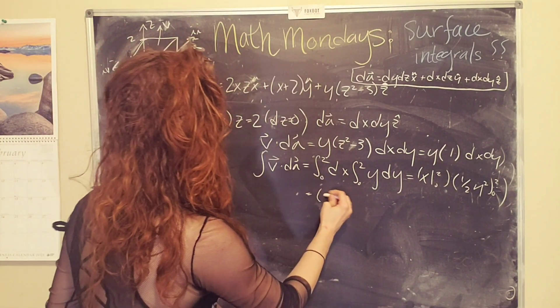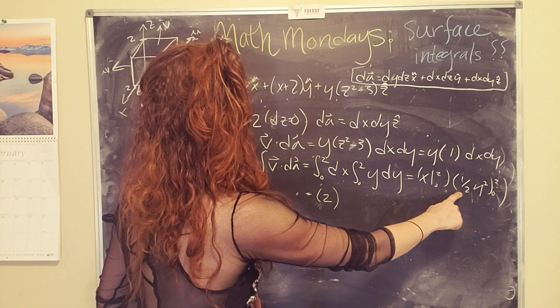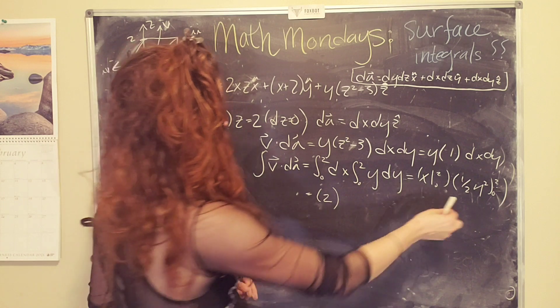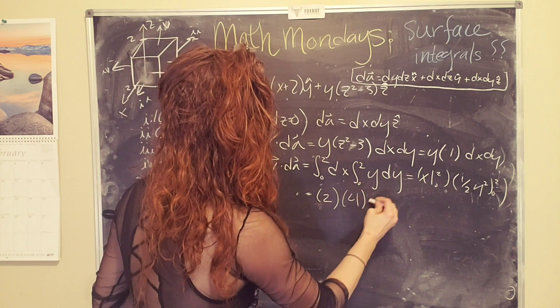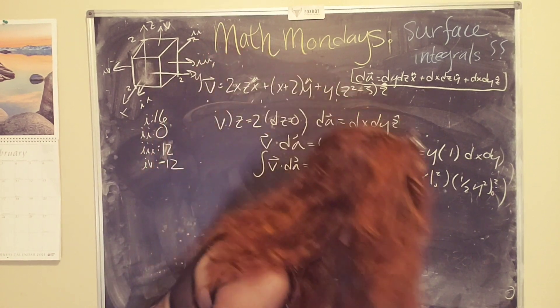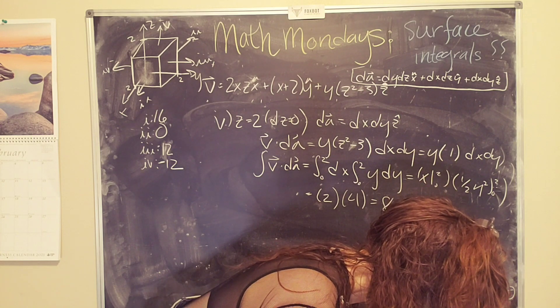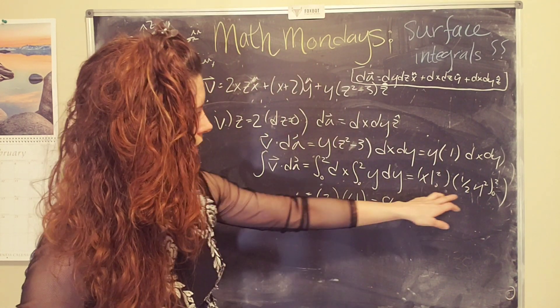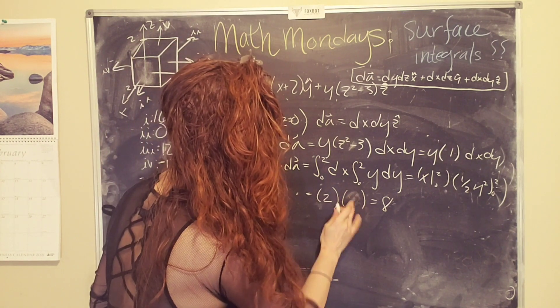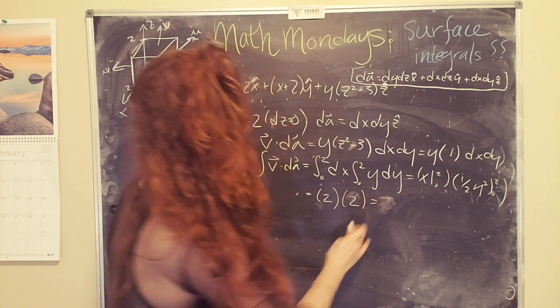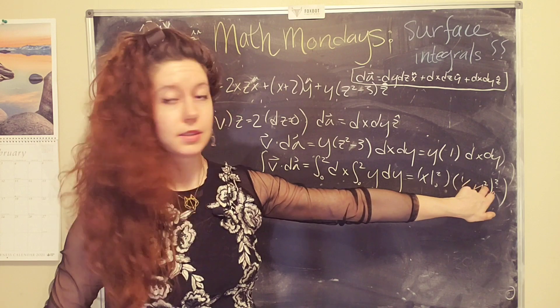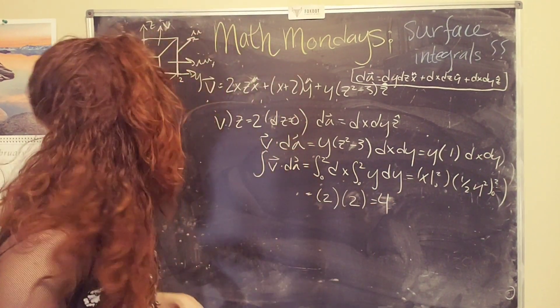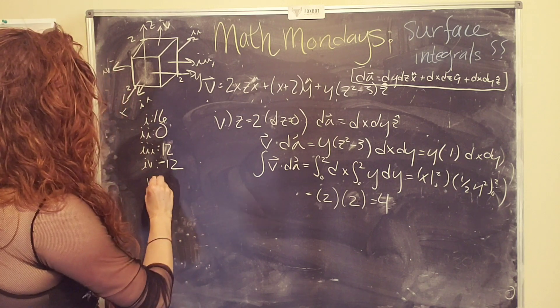And so then we have x from zero to two times one half y squared from zero to two. And again, we have a two times a one half y squared, which is going to give me a four, which is going to give me an eight. Oops. What happened here? Hold on. I did this too fast. This is a two. Silly. Okay. Two squared is four. Divide by two is two. So boom. Okay. Eight. Okay. Whew.